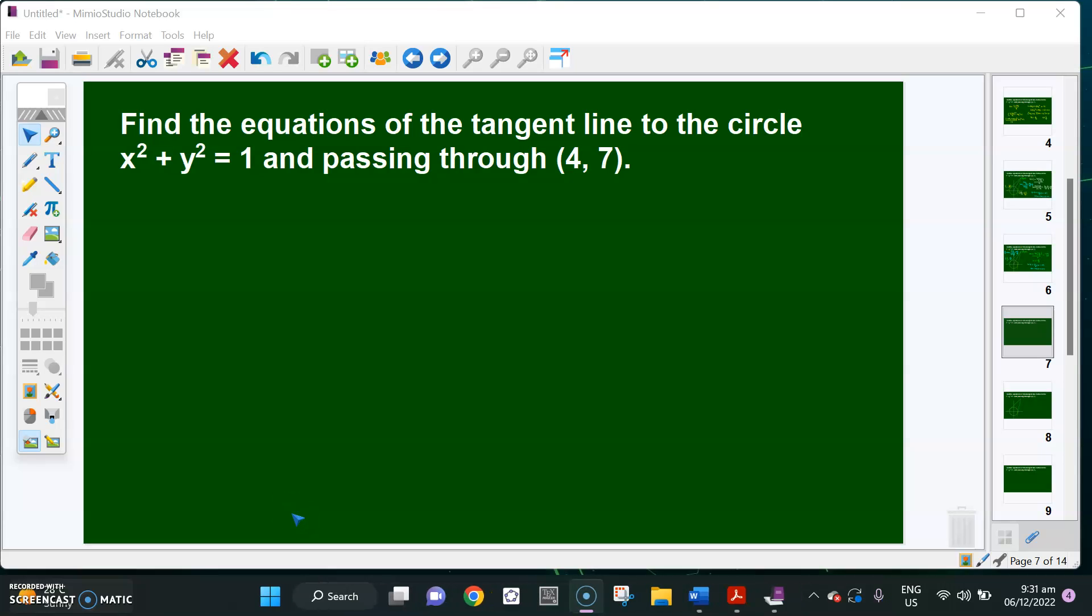Find the equations of the tangent line to the circle x squared plus y squared equals 1 and passing through the point (4, 7). Well obviously we have here a unit circle which is centered at the origin and passing through an external point (4, 7).